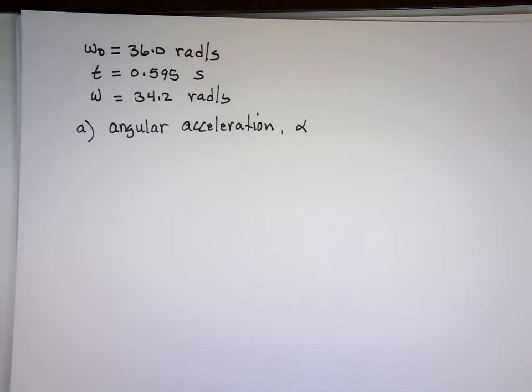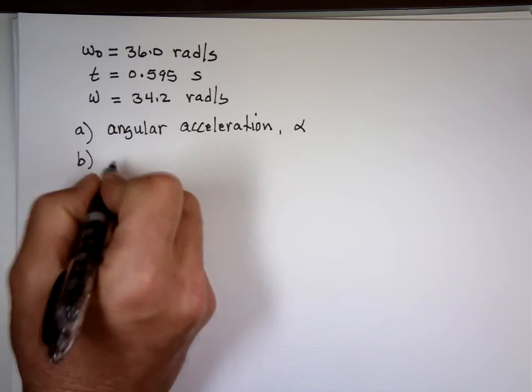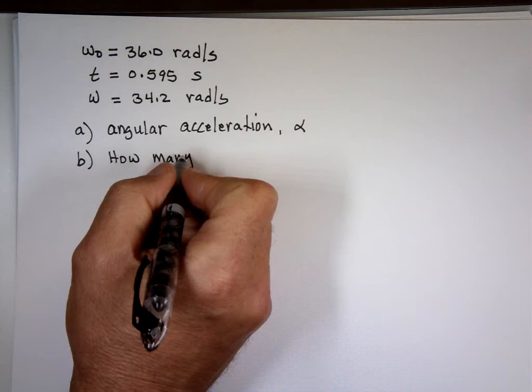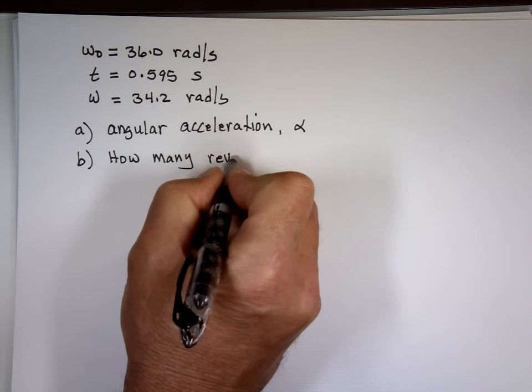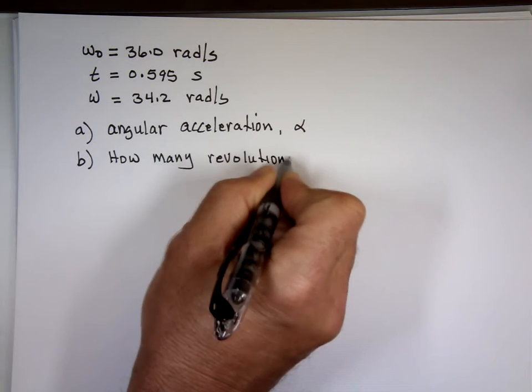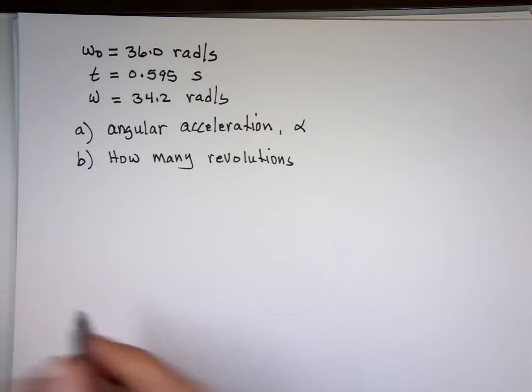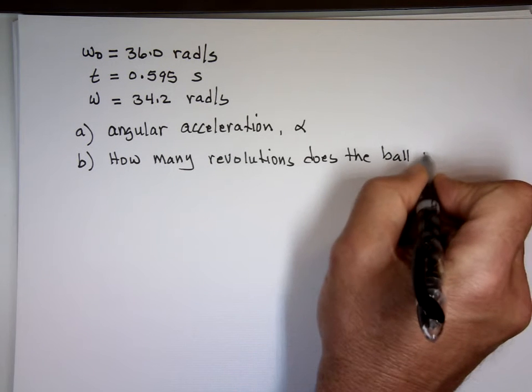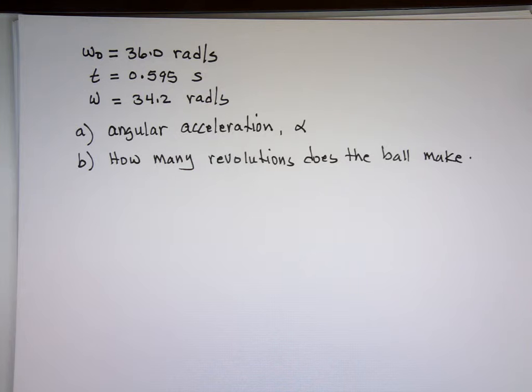Alpha is? And assume the acceleration, just like we made the assumption constant acceleration in the previous nine chapters, we're making the assumption the acceleration is constant here. And the next question, part B, how many revolutions does the ball make before the catcher catches that ball? How many times it spun around?